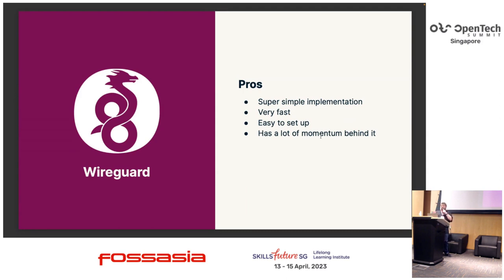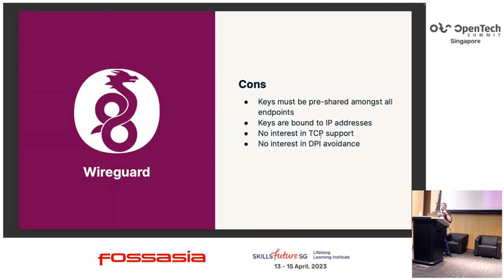WireGuard has lots of pros — it's a super simple implementation, it's super fast, it's very easy to set up, and it has a lot of momentum behind it. But there are some cons, from the perspective of ExpressVPN and what we need. With WireGuard, all your keys must be pre-shared among all your endpoints. That's fine for a small number of people, but when you have many thousands of servers and millions of clients, pre-sharing keys is undesirable. You can build infrastructure to handle this, but that takes you away from actually focusing on the VPN part.